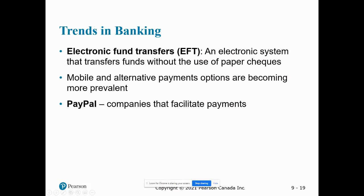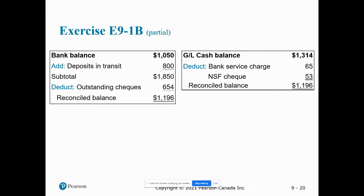There are all sorts of options for paying: electronic fund transfer, direct debits, PayPal, WayPay, Pluto, Rotessa — all sorts of ways to get money between companies. There are a couple of exercises. I'm not going to go through them because it just has the answers, but you can pause this video and go through exercise 9-1B to see if you come up with the same answer. It'll give you an idea of the process and where to put certain things like the NSF check.